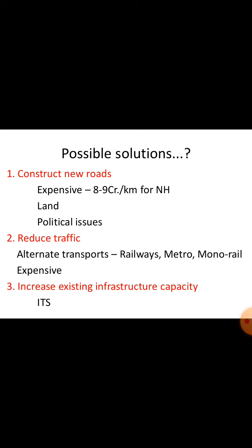Now, how to solve these issues? Some possible solutions are given. The first solution is to construct a new road — this would decrease accidents and save lives. However, the construction cost for a national highway is 8 to 9 crore per kilometer, which is very expensive. It also requires more land and involves political issues, so this solution has significant challenges.